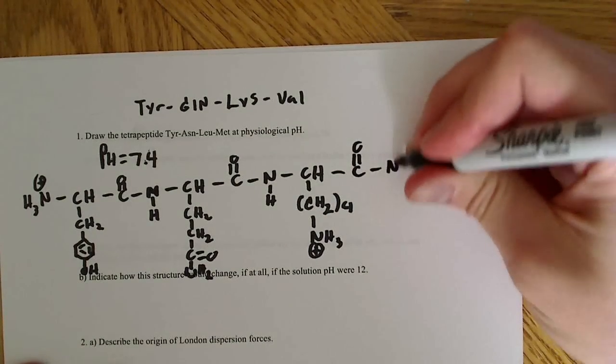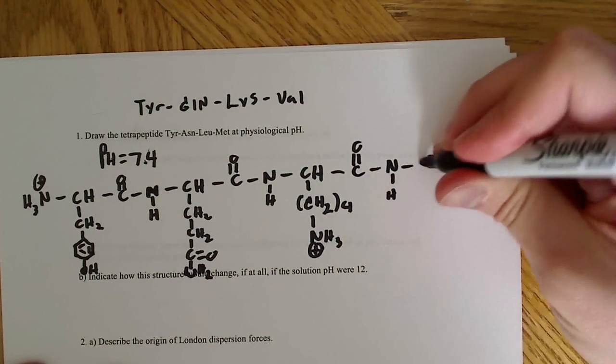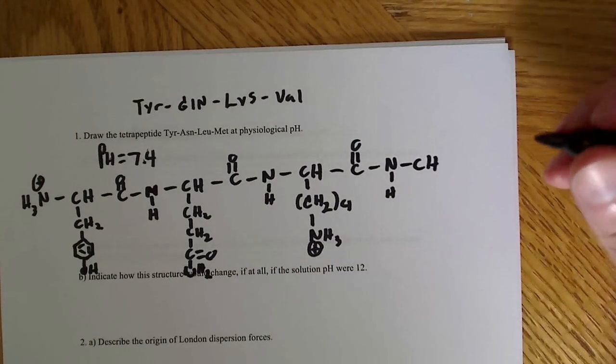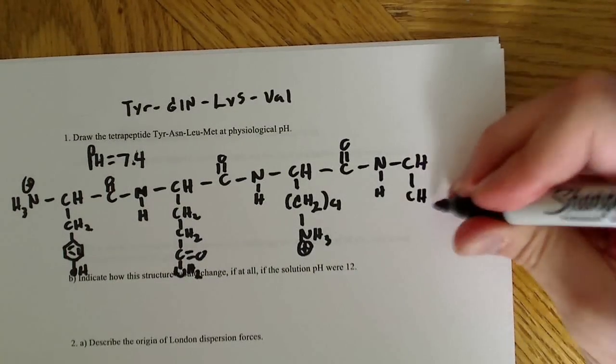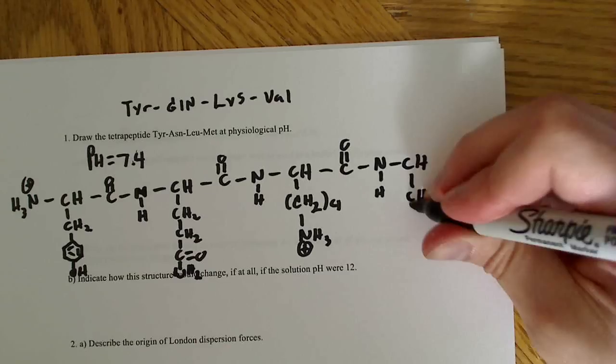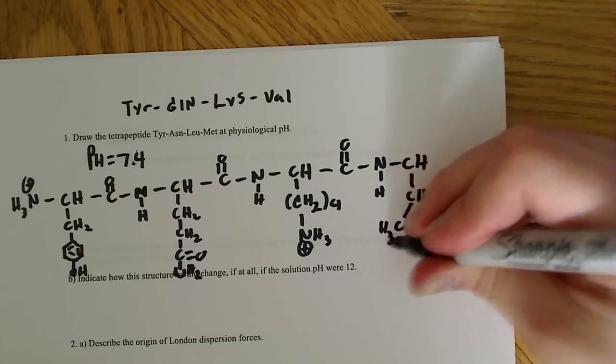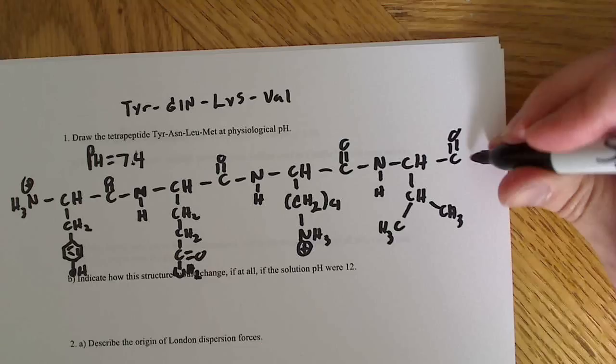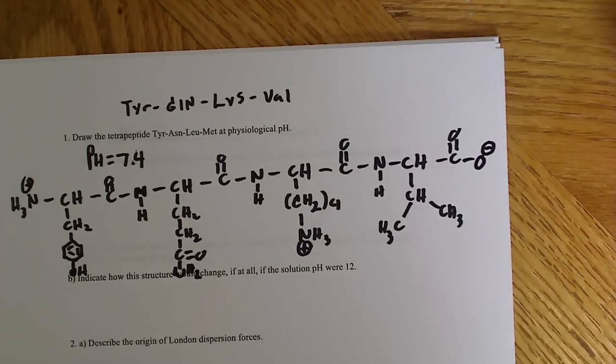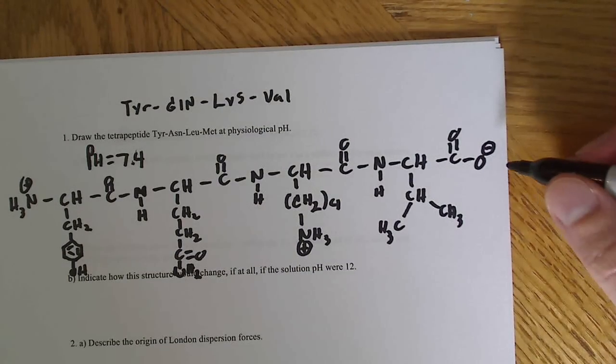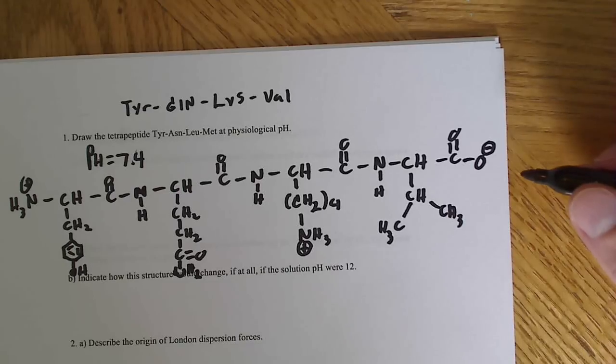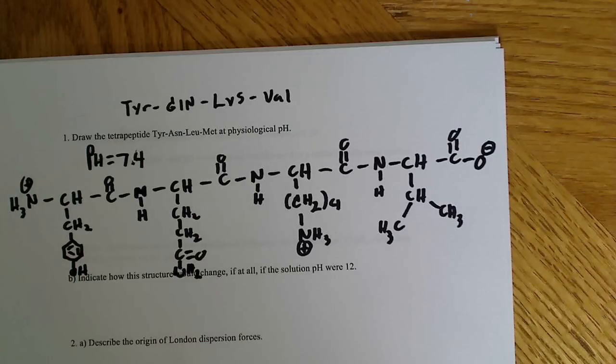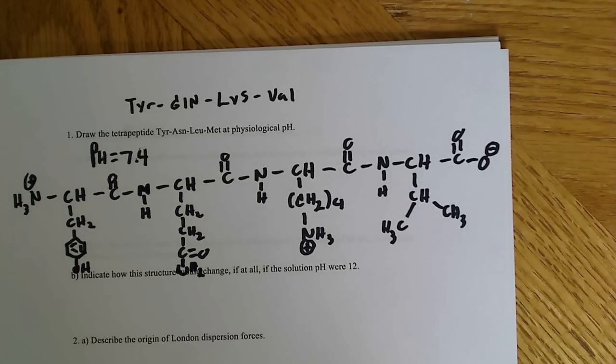And the last one from this group is going to be valine, so that's CH, CH3, CH3. And on the end here, we'll have a C double bond O, O minus. And for reference, this one loses its hydrogen or proton at about pKa of 3.5. So that's the tetrapeptide that I was hoping to draw.